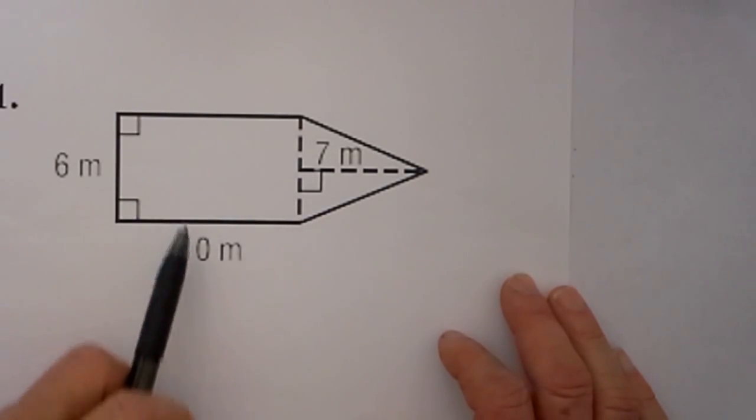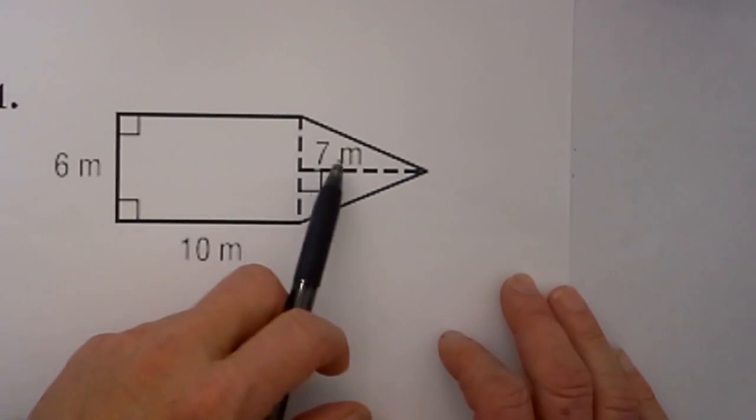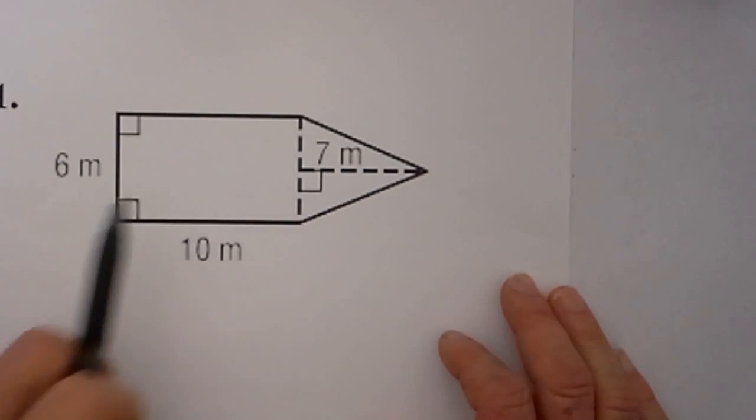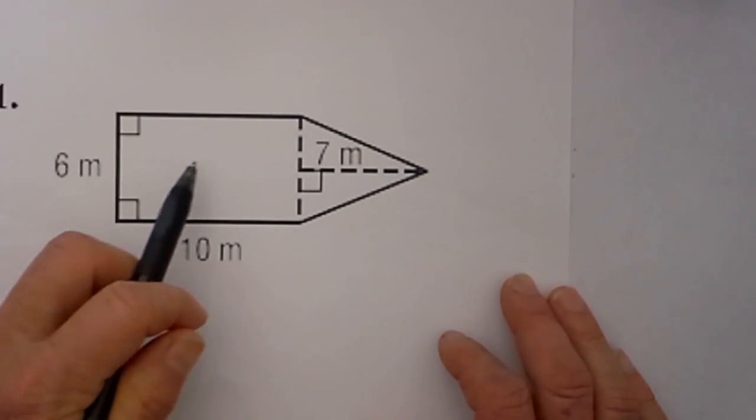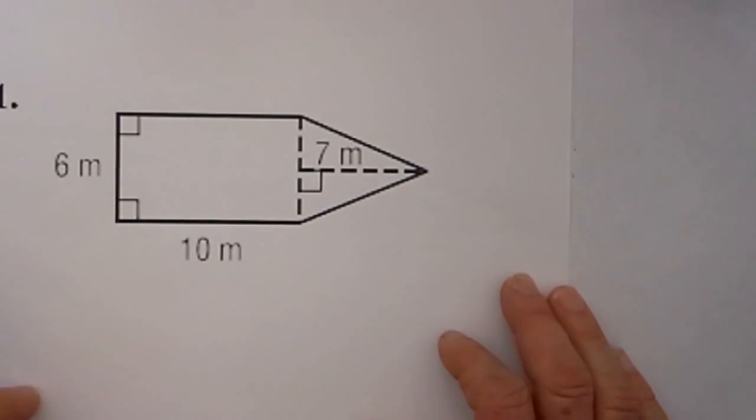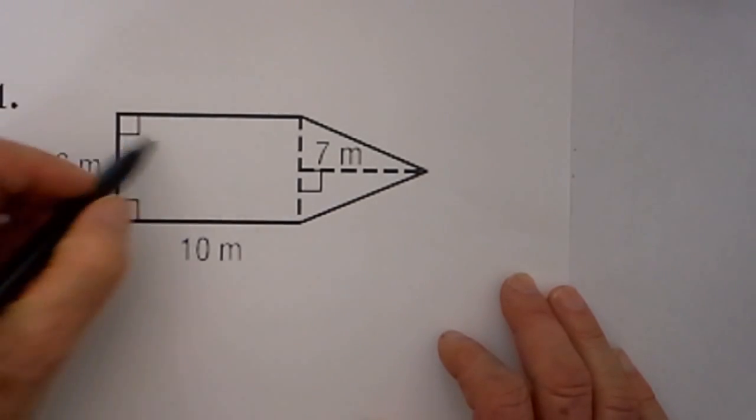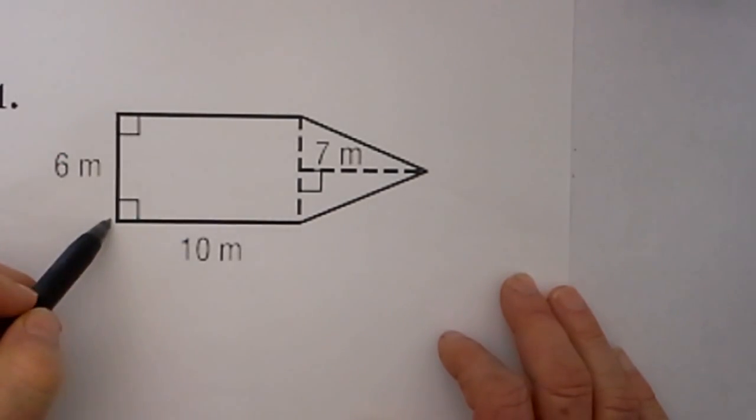For instance, in this composite figure we have a rectangle and a triangle. In order to find the area, you can just find the area of the two different shapes and then add them. In this example we have first a rectangle, and I will outline the rectangle.